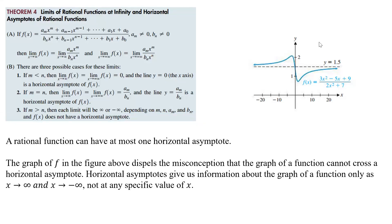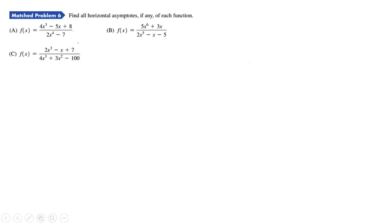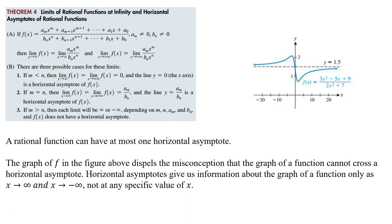Here we're talking about limits of rational functions at infinity and the horizontal asymptotes of rational functions. Rational functions are fractions. If we have f(x) equal to x^n plus a_{n-1} x^{n-1} and so on, over b_n x^n plus b_{n-1} x^{n-1} and so on, with those leading coefficients not equal to 0, then the limit of f(x) as x approaches infinity or negative infinity equals the limit of the ratio of the leading terms.